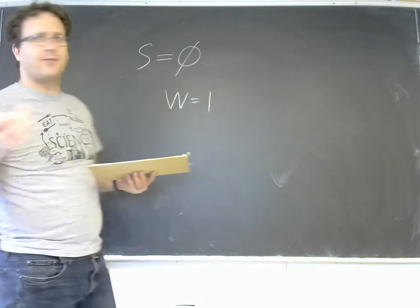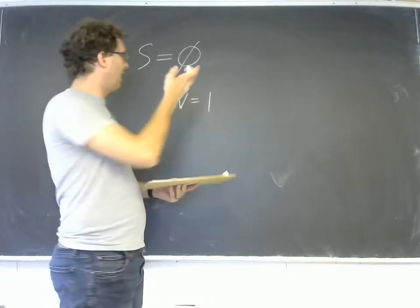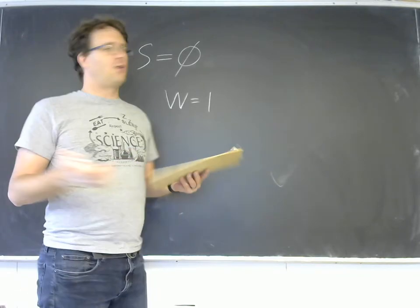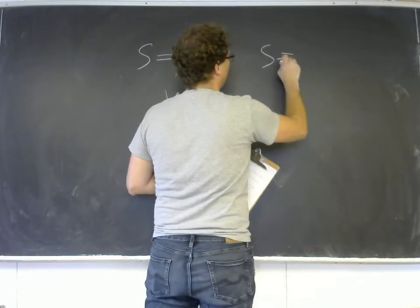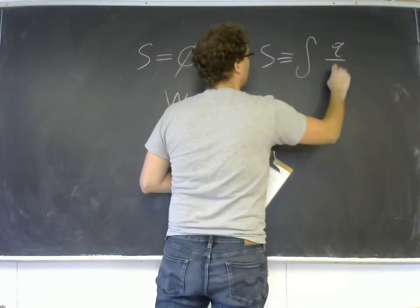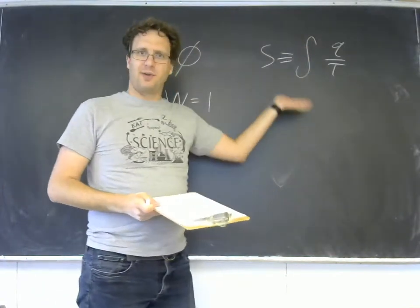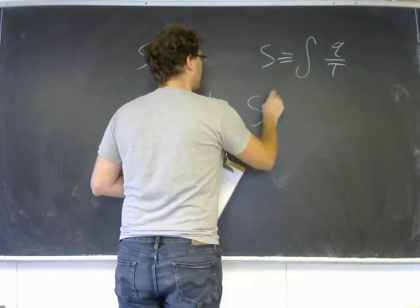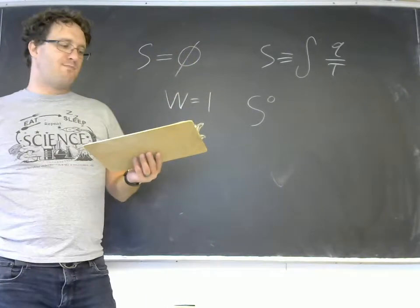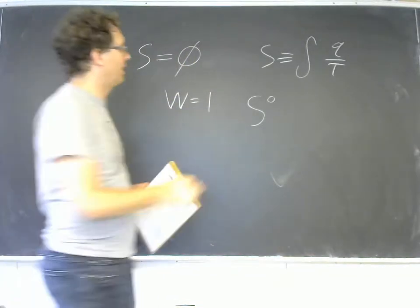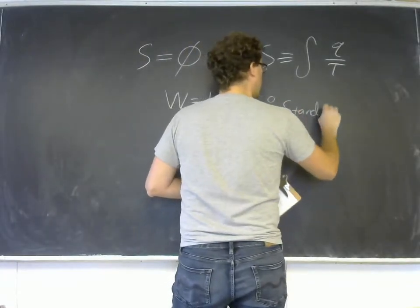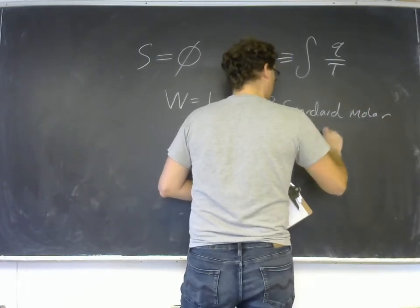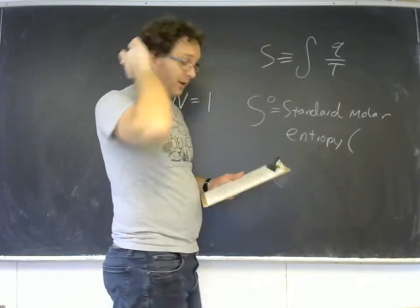Now, for every substance, we could imagine having a crystal at absolute zero and having it be perfectly ordered, and then slowly warm it up. Remember S was originally defined as the integral of Q over T, so we could measure how much heat it takes to warm that crystal up and integrate that integral and eventually arrive at what we call the standard molar entropy.